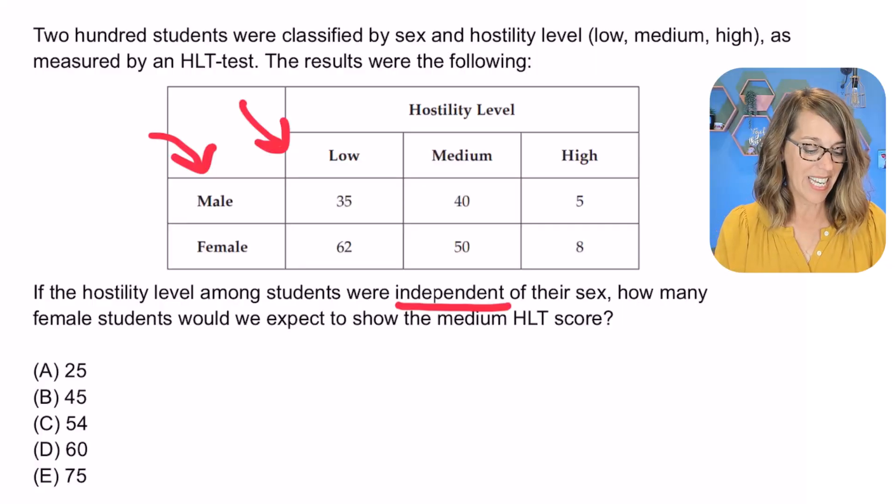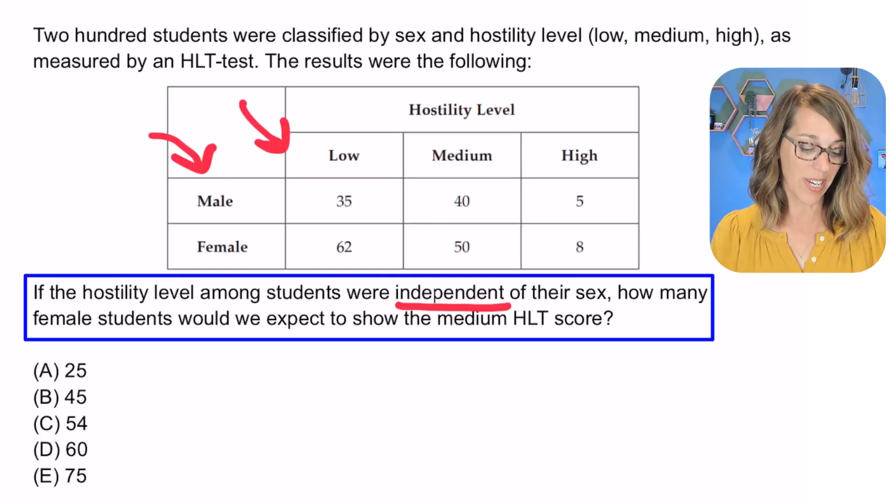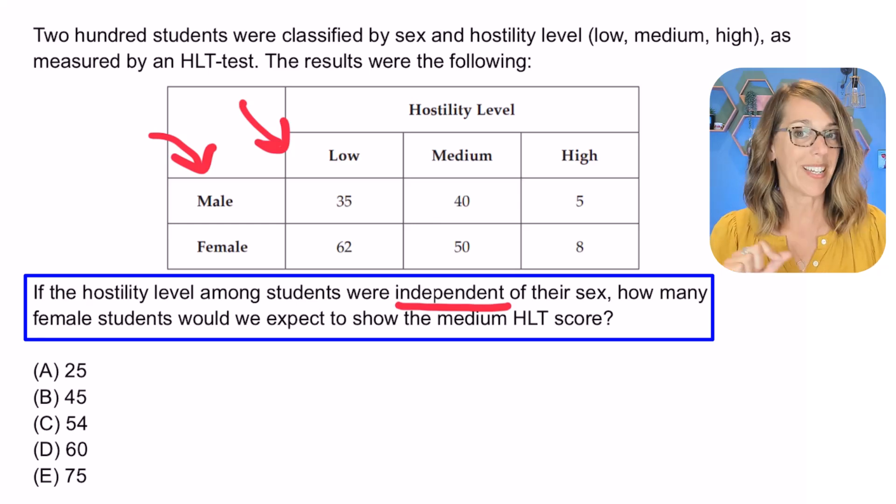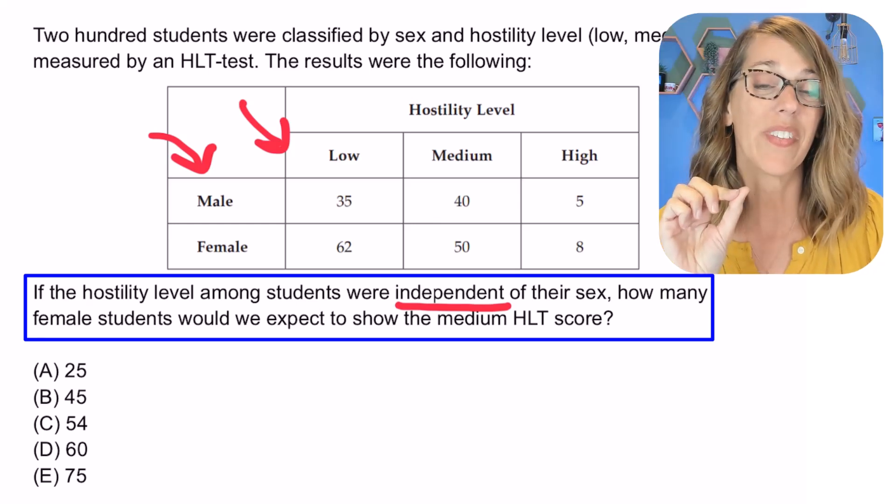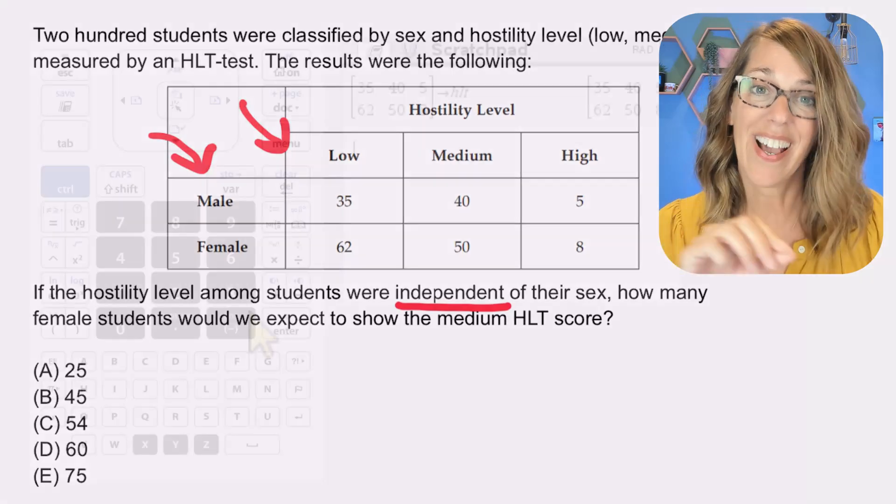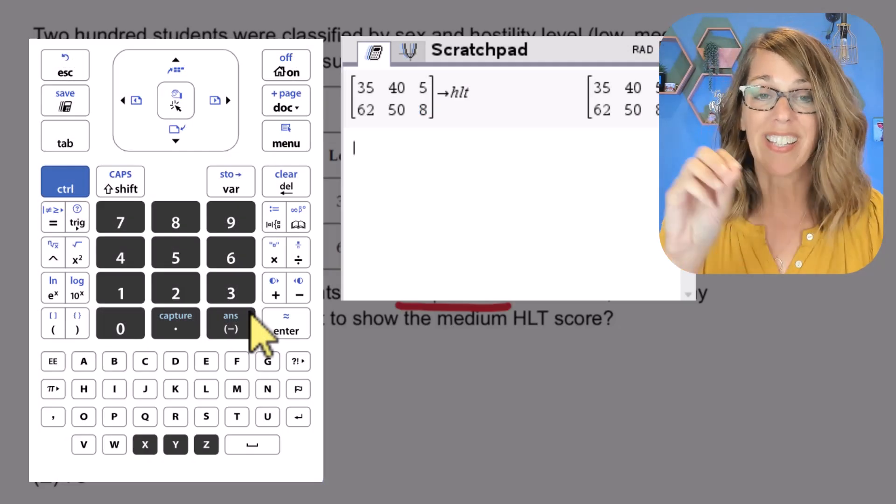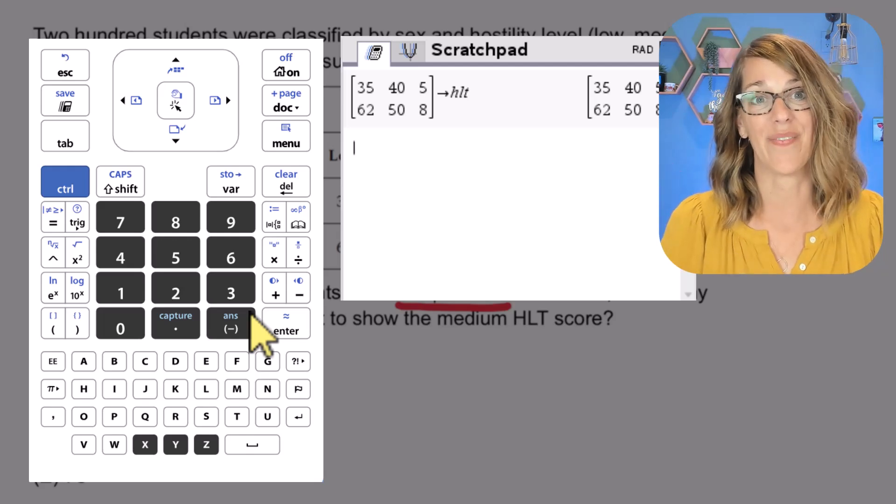Let's read that question a little more carefully so we know exactly what we want to answer. It says if hostility level among students were independent of their sex or gender, how many female students would we expect to show the medium HLT score? That means we want the expected values. The calculator is going to redistribute these values for us so that they're distributed the same for the male and female students.